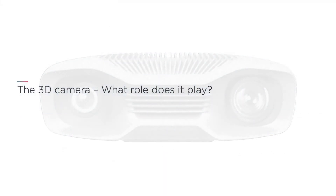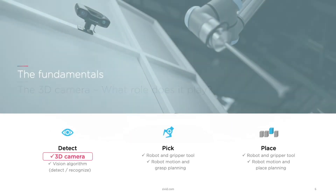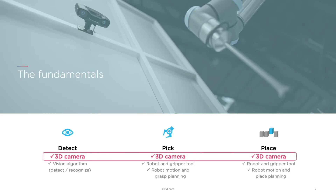What role does the 3D camera play in all of this? Obviously it plays a central role in detection — you need a 3D camera to see the objects, and you need a vision algorithm that can detect certain forms, which could be CAD-based or AI-based. But something that is underestimated in the industry is the importance of the 3D camera in regards to pick and place operations as well.